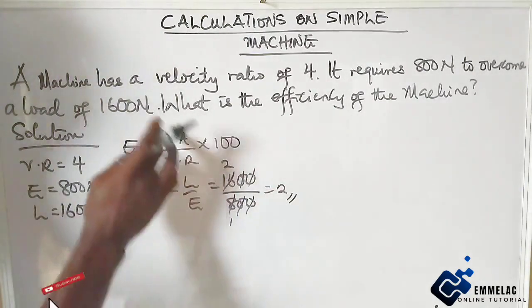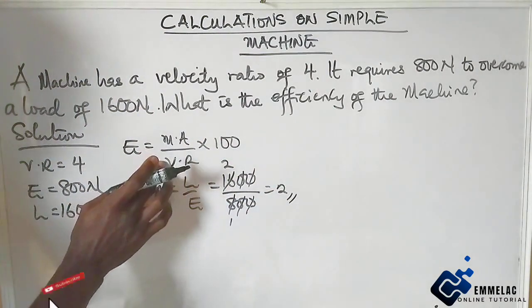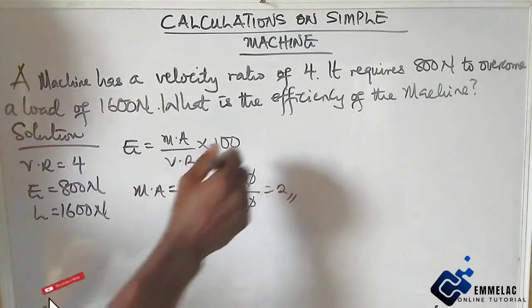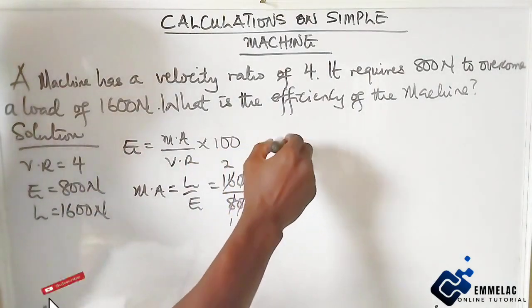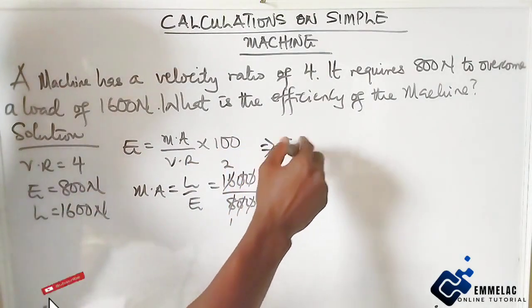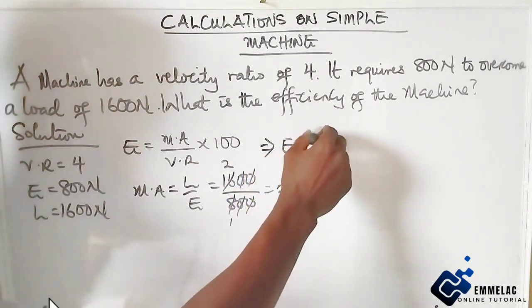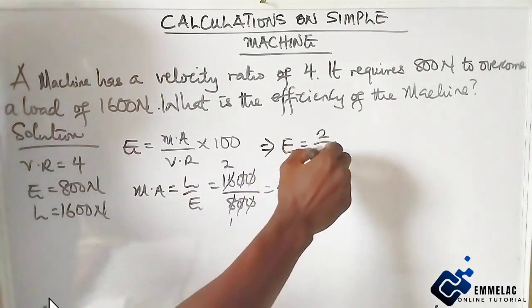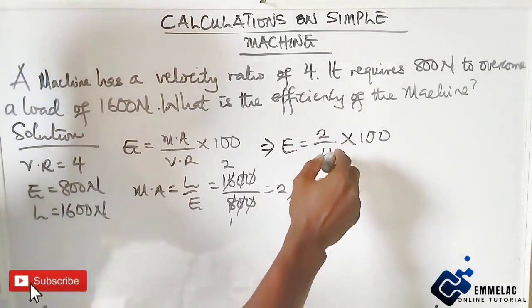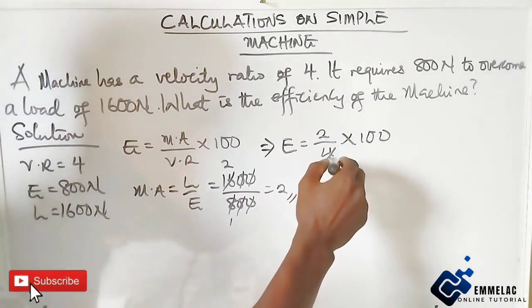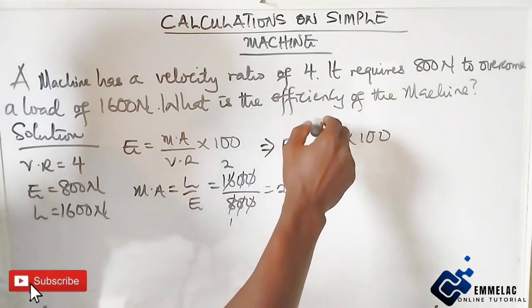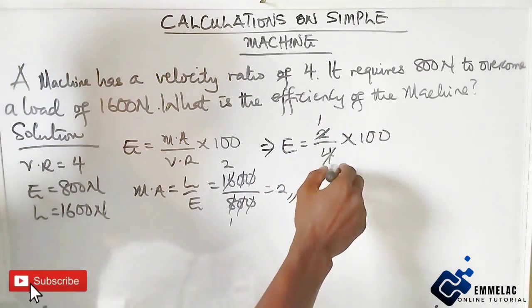Now if we input this into the formula with our velocity ratio of 4, we have mechanical advantage 2 over 4 times 100. So 2 over 4 gives us 1 over 2, which is 50.